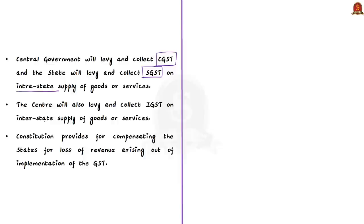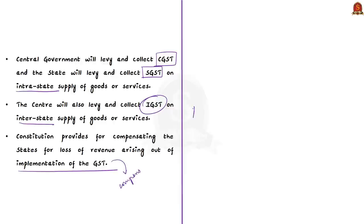The Centre also levies and collects IGST on interstate supply of goods or services. The Constitution has a provision to compensate states for loss of revenue arising out of the implementation of GST — we have discussed this GST compensation scheme on the September 1st, 2020 Hindu news analysis. If you have not watched it, please go back and watch it.